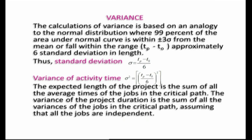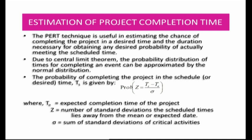The expected length of the project is the sum of all the average times of the jobs on the critical path. The variance of the project duration is the sum of all the variances of the jobs on the critical path, assuming that the jobs are independent. The estimation of project completion time in PERT is useful in estimating the chance of completing the project in a desired time. Due to the central limit theorem, the probability distribution of times for completing an event can be approximated by the normal distribution.